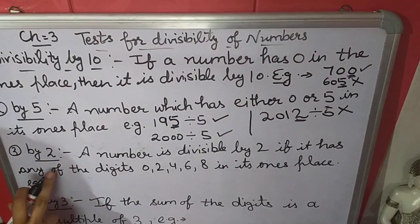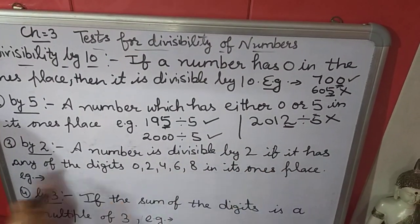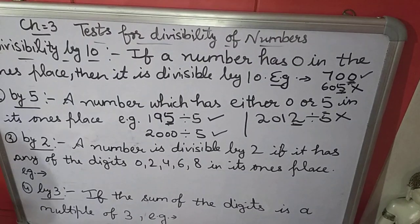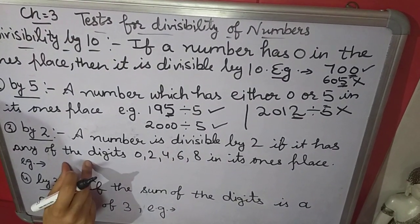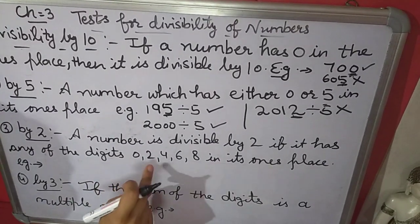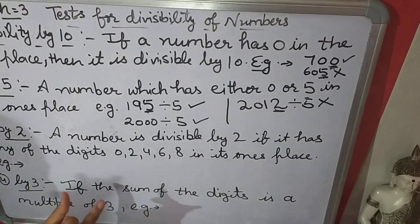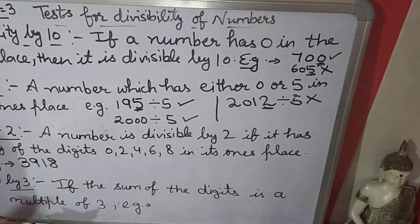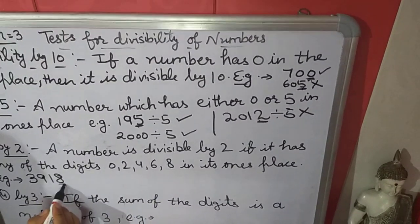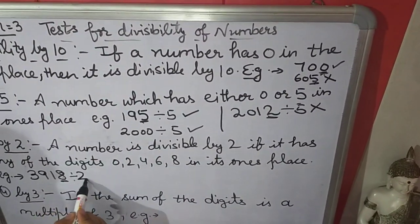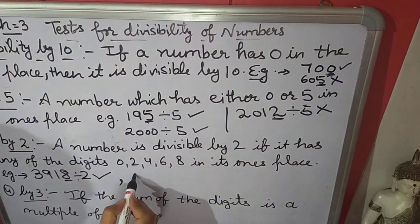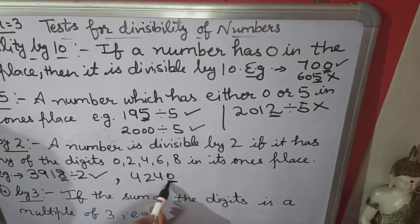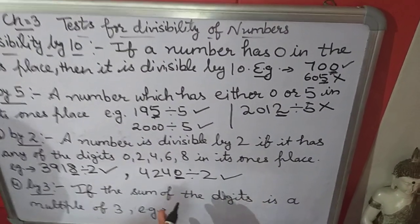Next is divisibility by 2. A number is divisible by 2 if it has any of the digits 0, 2, 4, 6, or 8 in its 1's place. If in the number's 1's place there is 0, 2, 4, 6, or 8, then the complete number is divisible by 2. Example: 3,918 — the 1's place is 8, so it is divisible by 2. Another example: 4,240 — the 1's place is 0, so it is also divisible by 2.